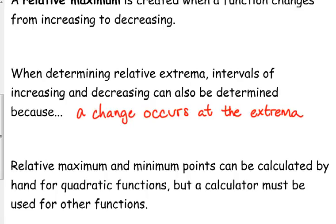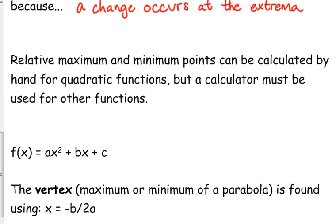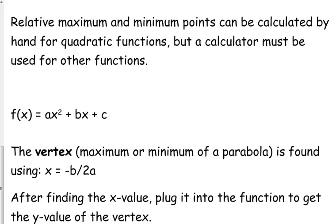For most functions, you're going to have to rely on your calculator, but for quadratic functions, you can actually find the maximum and the minimum by hand. Here's your general form of quadratic function: Ax squared plus Bx plus C. To find the vertex of a parabola, the x-coordinate can be found by doing negative B over 2A. After you find the x value, you're going to put it into the function to get the y value of the vertex.